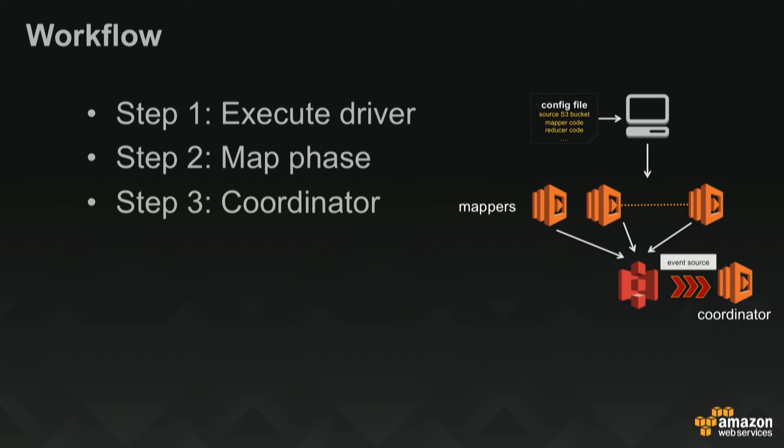Just like any system, there's a disconnect — there's a map and a reduce, so you need something to coordinate between mappers and reducers. Here comes the coordinator, which is a Lambda function that subscribes to S3 as an event source. What it does is listen for mapper outputs that are done and coordinate the next steps. Once all the mappers are finished, we enter the reduce step. The coordinator basically invokes the reducer function, the reducer writes its output, and finally the output is also written to S3.